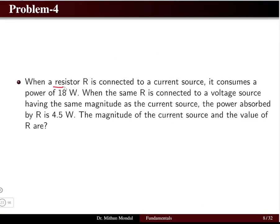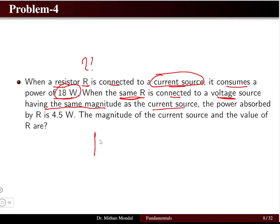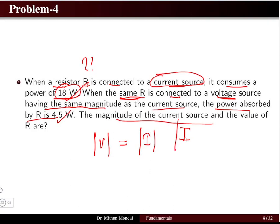The answer is two lamps connected in series. Moving to problem four: a resistor R, of unknown value, connected to a current source consumes 18 watts. The same resistor connected to a voltage source of the same magnitude as the current source absorbs 4.5 watts. Find the magnitude of the current source I and the value of resistor R.